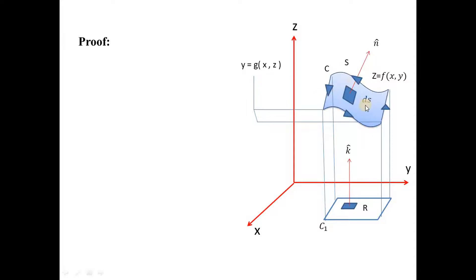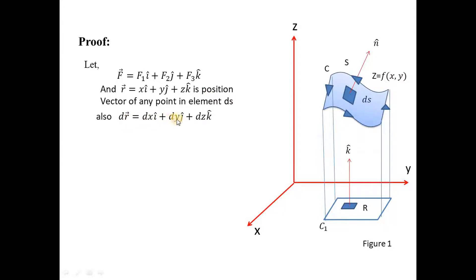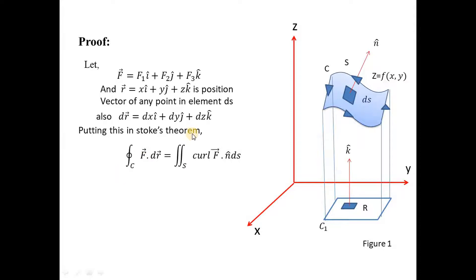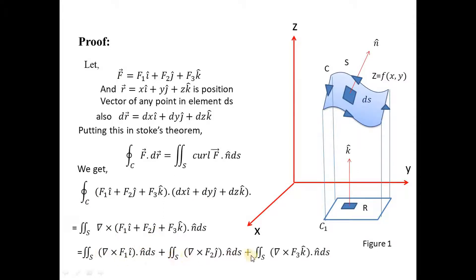Now let the vector field on surface S be F = F1 î + F2 ĵ + F3 k̂. Let there be any point within the surface element whose position vector is r = x î + y ĵ + z k̂, so dr = dx î + dy ĵ + dz k̂. From Stokes' theorem, the line integral of F along closed curve C equals the surface integral of curl F dotted with the normal of the surface element DS.